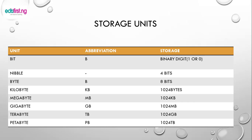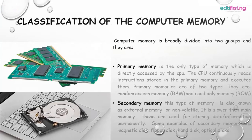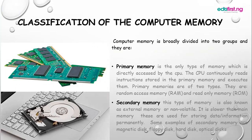The kilobyte consists of 1024 bytes. We also have the megabyte (MB), which consists of 1024 kilobytes. We also have the gigabyte (GB), which consists of 1024 megabytes. We also have the terabyte (TB), which holds 1024 gigabytes. We also have the petabyte, which holds a memory capacity of 1024 terabytes. These are some of the storage units we have in a computer.